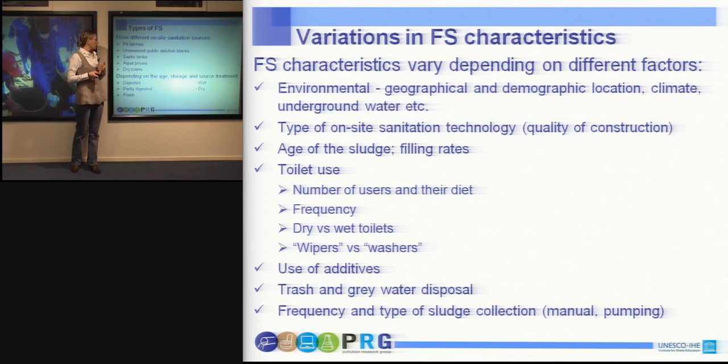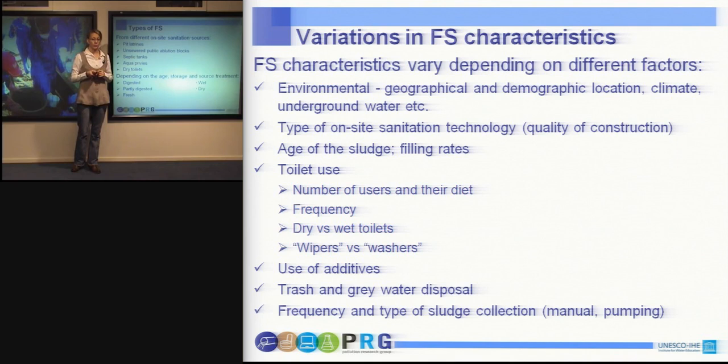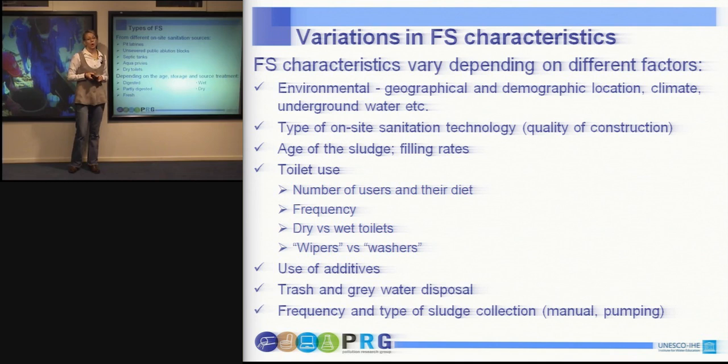We can distinguish between different types of fecal sludge and classify them by the type of on-site sanitation sources, such as pit latrines, septic tanks, dry toilets such as urine diversion or composting toilets. Depending on the age and storage or source treatment, we can have stabilized or digested sludge, semi-digested sludge, or fresh sludge. Depending on the type of system — whether we flush or not — we can have wet or dry sludge.